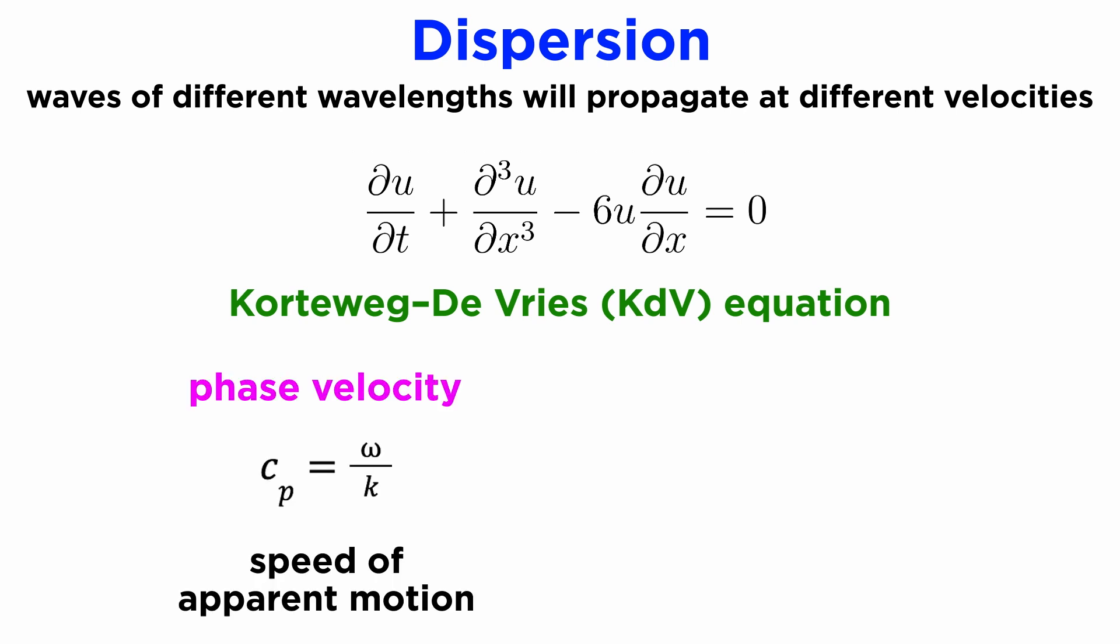For these types of systems, the individual wave crests will propagate at some phase velocity, but if different wavelengths are present in the initial conditions, then the solution will appear to disperse collectively at some different group velocity.